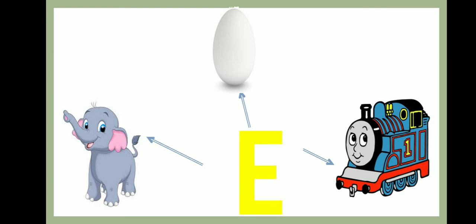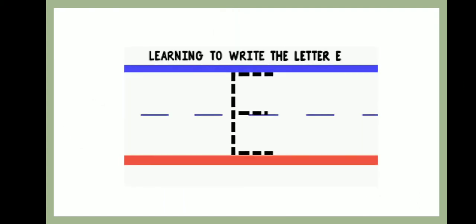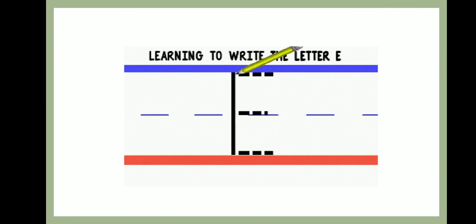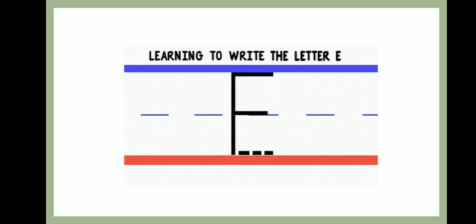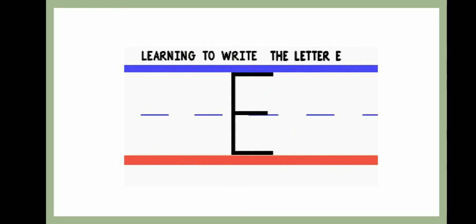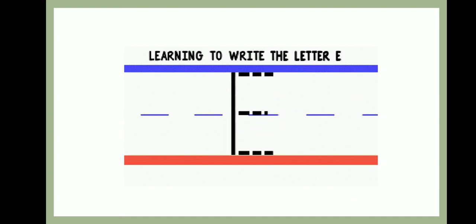Now kids, I am going to tell you how to write letter E. First you have to trace a standing line like this. And then you will trace a sleeping line like this. Then come to the middle, and we will trace the middle line. And then we will trace the bottom line like this. We will do one more time: first trace the standing line, then the sleeping line, then come to the middle line and trace it like this.